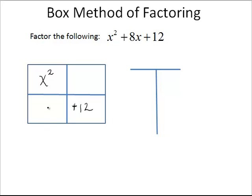Now, you may be wondering what goes in these two diagonal boxes — that's what we're going to figure out. What we will first do is multiply the coefficients of these two boxes. In this case, we have a 1 and a 12. So, multiplying, we get 1 times 12, which is 12 — a positive value.